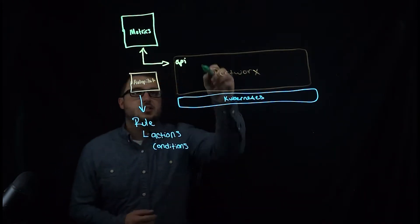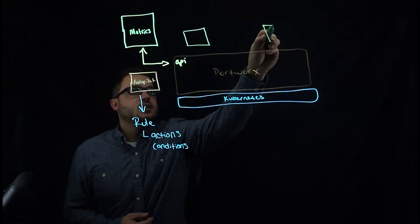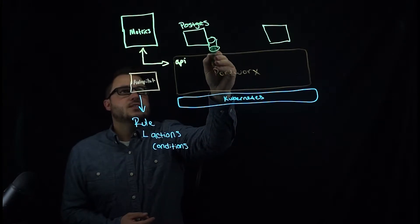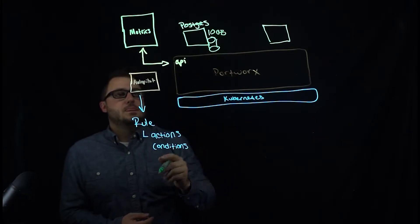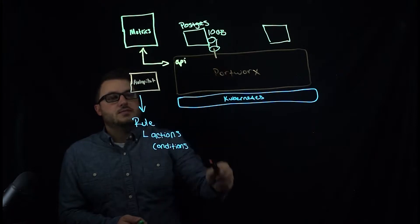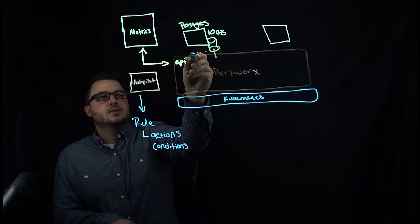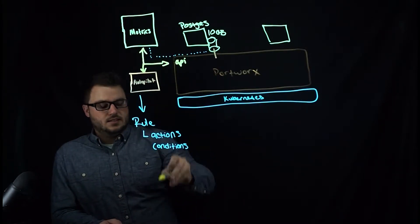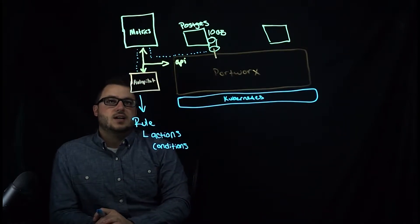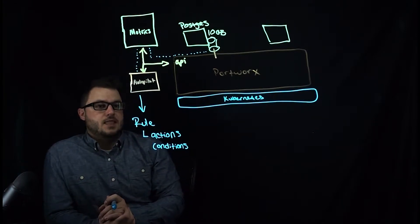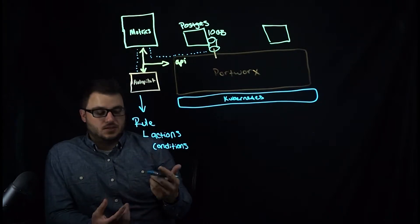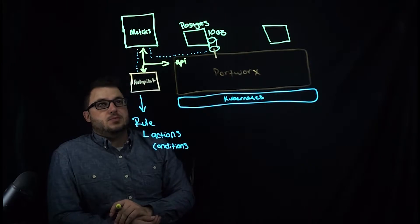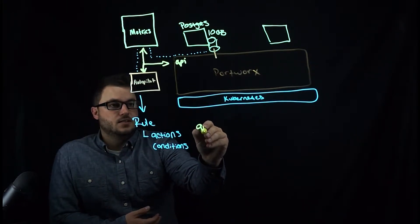Let's say we have a couple of applications running in our cluster. Let's say that one of them is Postgres, and this Postgres database has a volume which is 10 gigabytes — a Portworx-provided volume. These metrics for this volume get sent over to the metrics API. Autopilot is able to pull these metrics from the deployment of Prometheus or whatever you have for metrics. Once Autopilot is aware of these metrics, you can create rules. How you would target this application and this volume is by a selector — if this application has a label of app equals Postgres.